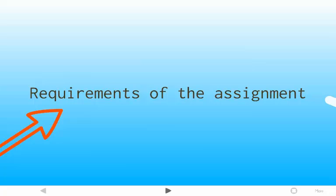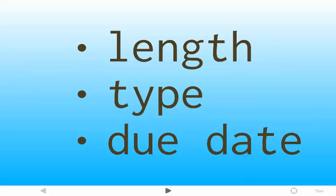When you're thinking about how to select a topic, you want to think about the requirements of the assignment. What is required of you? You don't want to spend a lot of time working on a paper or a project and then realize you missed something important and didn't follow the instructions. Consider the length of the assignment — how long does your paper have to be? That can impact what topic you choose; you don't want to cover a really huge topic in just three pages or a really tiny topic in 20 pages. What type of paper is it — argumentative, persuasive, informative, or a literature review? That's going to impact your topic too. And how soon is it due?